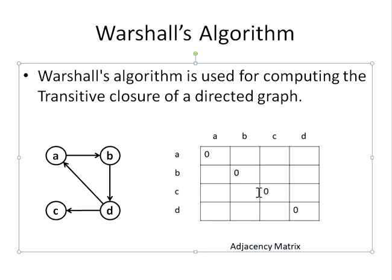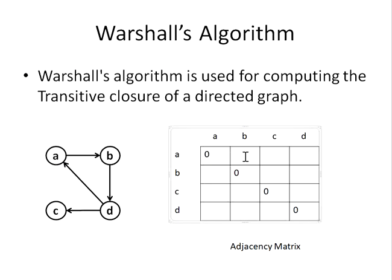Next, we fill in row A. Is there a path from A to B? Yes, so that is 1. Is there a path from A to C? No, so that is 0. Is there a path from A to D? There is a path from D to A, but no direct path from A to D. There may be an intermediate path via A→B→D, but we are only concerned with direct connections, so A to D is 0.